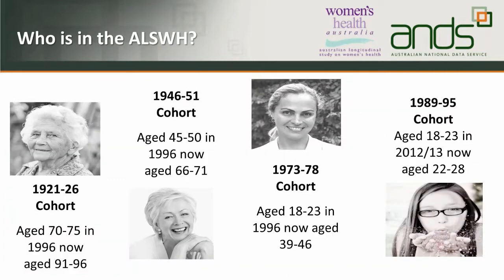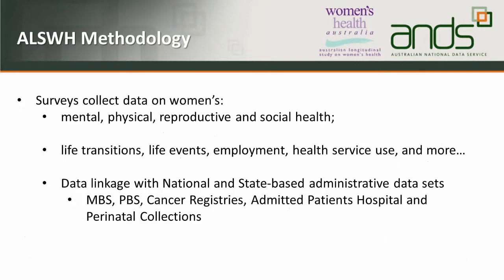We have four cohorts, which are age-based and defined by years of birth. The oldest was born 1921 to 1926, and there are three other cohorts of various ages. As you can imagine, each cohort has their own health issues, and that's what we are interested in — and indeed what the Australian Government is interested in. We collect health issues including mental, physical, reproductive, and social health.